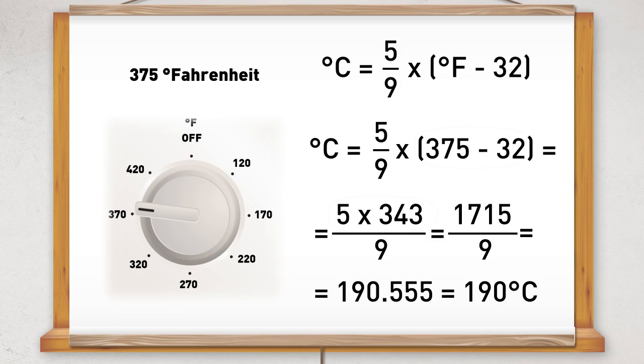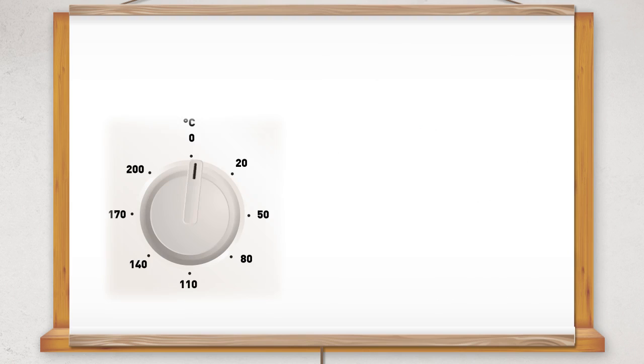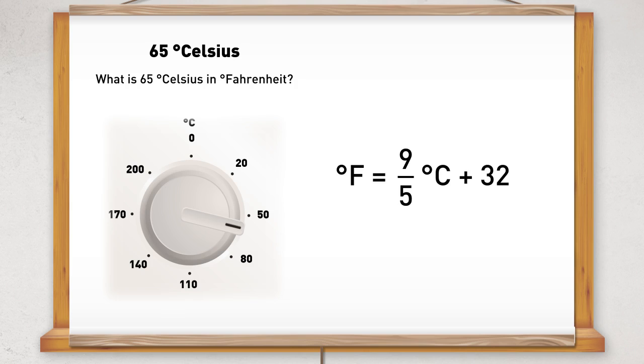What about Celsius to Fahrenheit? My oven has a cleaning program which runs at 65 Celsius. What is 65 degrees Celsius in Fahrenheit? This time the formula is 9 over 5 times the number of degrees Celsius plus 32.